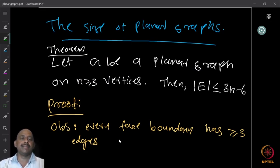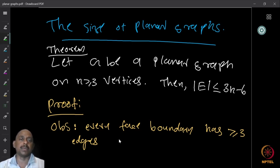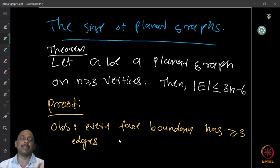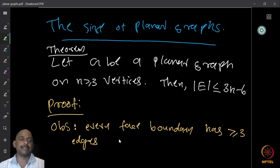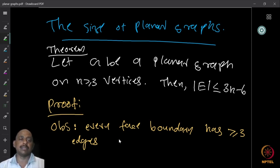Euler's identity is a very powerful tool. We will use it to prove that planar graphs cannot have too many edges. For a complete graph on n vertices, you can have up to n(n-1)/2 edges — close to n²/2. But for planar graphs, the number of edges is bounded as a function of n.